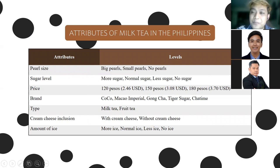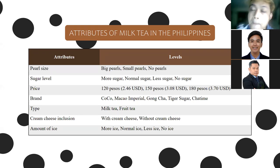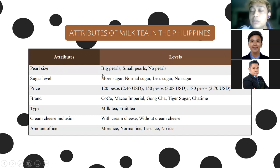So instead, we use orthogonal design. The computer selects a minimum set of stimuli that still captures all the information. For example, if you have three attributes each with two levels, the minimum number of stimuli is just four. The computer generates the specific combinations for us — we can't draw it manually when there are many attributes. That's why we use orthogonal conjoint design.